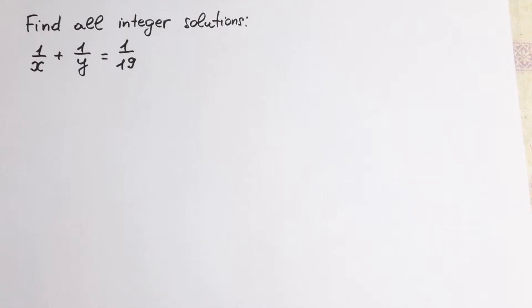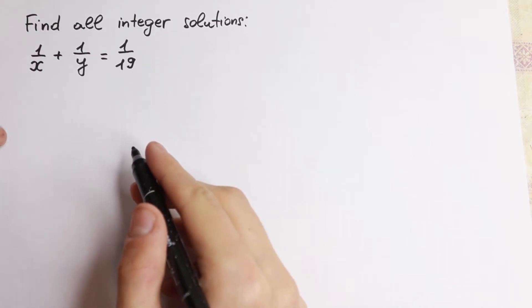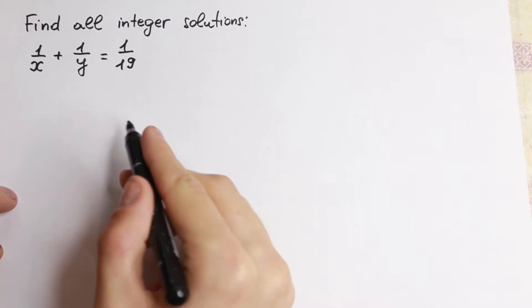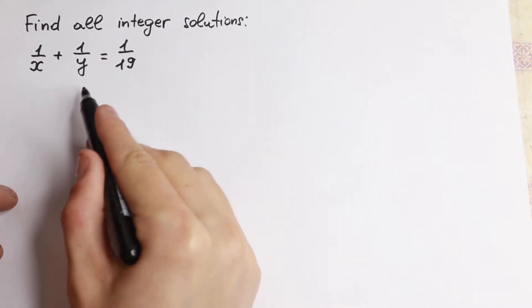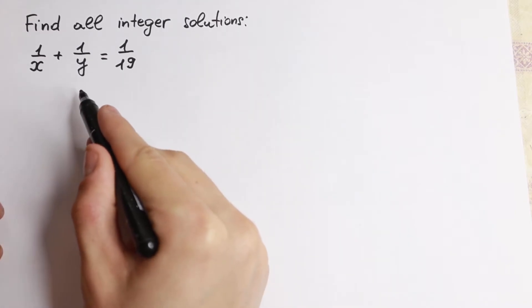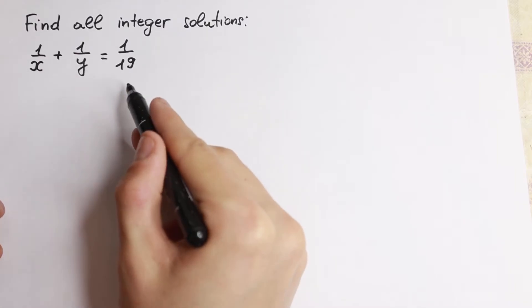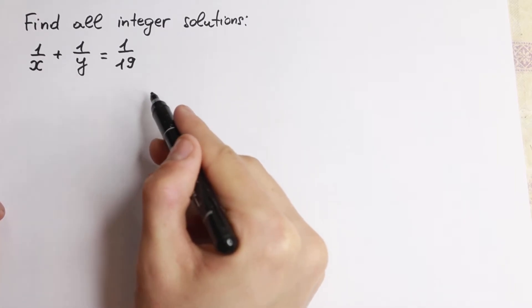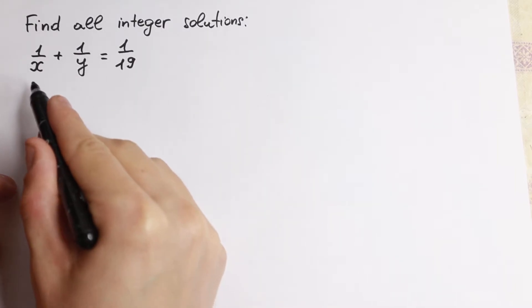Hello everyone, welcome back to High Mathematics. In this video we are going to solve this interesting algebra problem. We need to find all integer solutions. We have 1 over x plus 1 over y equal to 1 over 19. How can we find this solution?